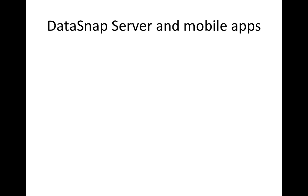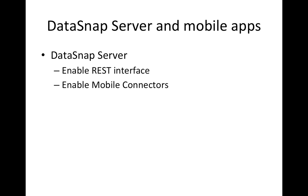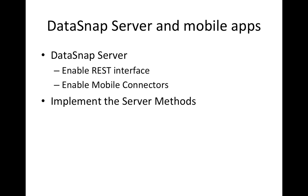In order to allow mobile applications to connect and interact with the business logic on your Datasnap server, there are a few things you need to know. First, you need to enable the REST interface and mobile connectors on your Datasnap server. After that, implement the server methods, which is the business logic on your server side, and generate the proxy classes for one of the platforms supported by the Datasnap connectors.